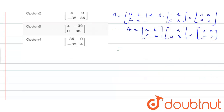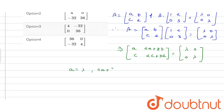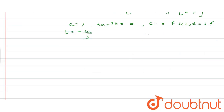By solving this multiplication, we get the matrix [[a, 2a+3b], [c, 2c+3d]] equal to [[λ, 0], [0, λ]]. That gives us: a = λ, 2a + 3b = 0, c = 0, and 2c + 3d = λ. Therefore, b = −2a/3 = −2λ/3, and d = λ/3.